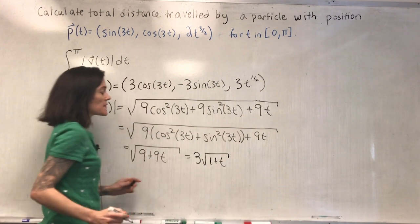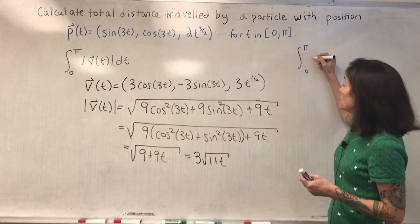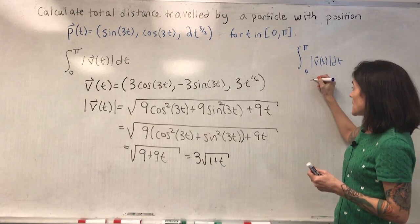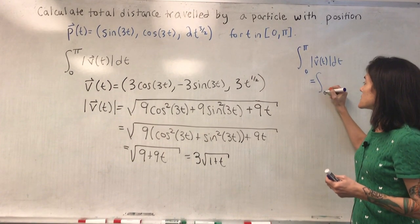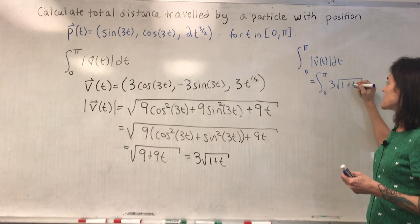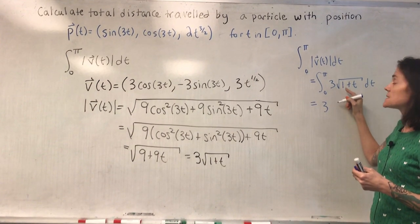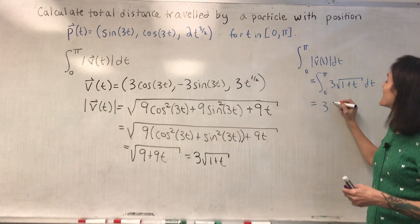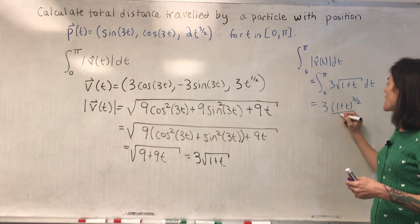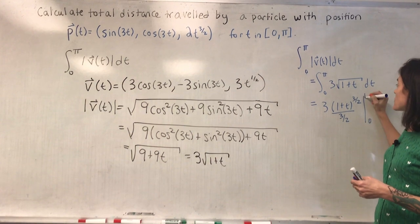Now this is something we know how to integrate, the integral of zero to pi of the speed dt equals the integral zero to pi of three square root one plus t dt. And I know this integral.